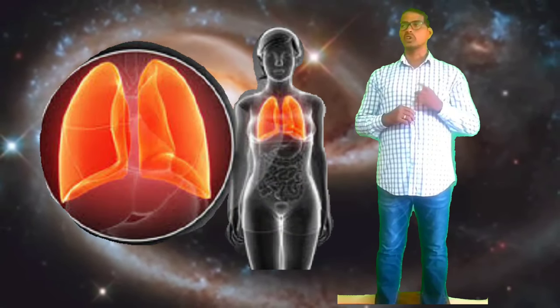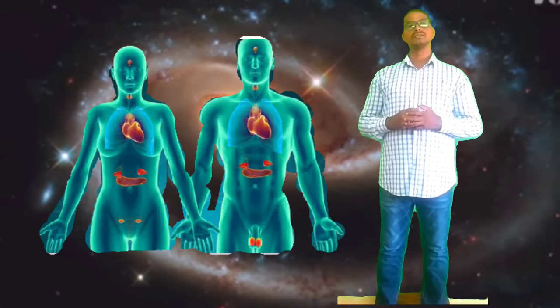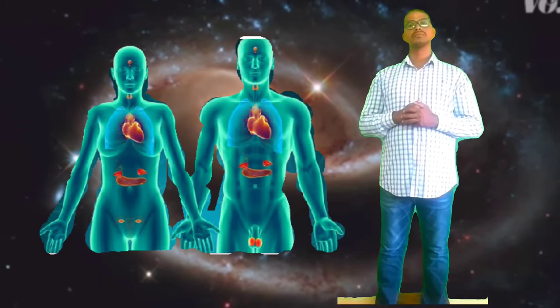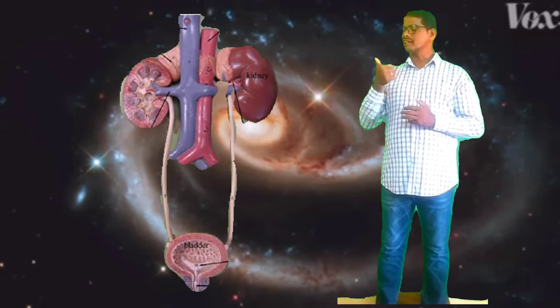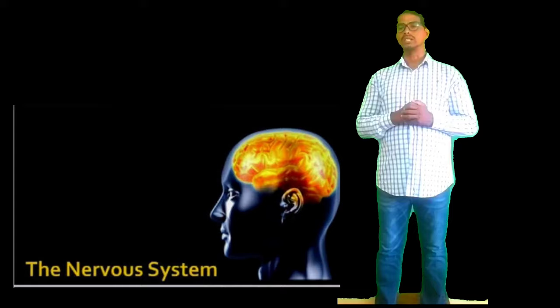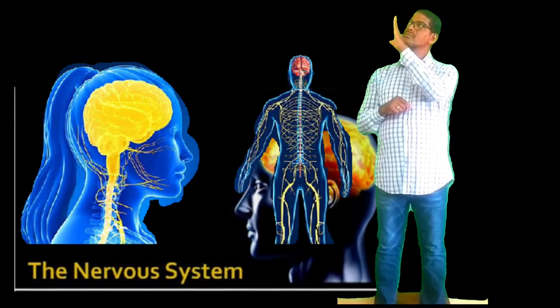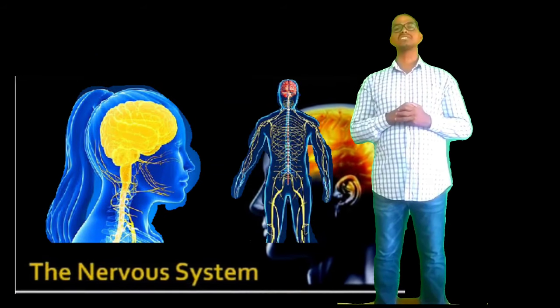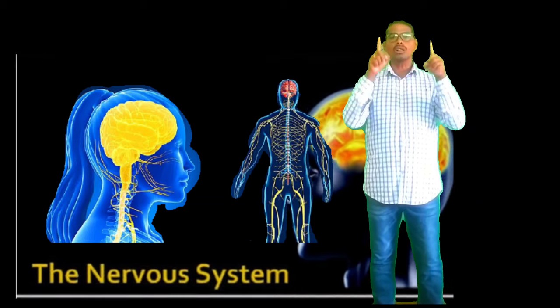We will see one by one those systems. The first one we will see digestive system, respiratory system, circulatory system, muscular system, endocrine system, lymphatic system, excretory system, and the last one, nervous system.